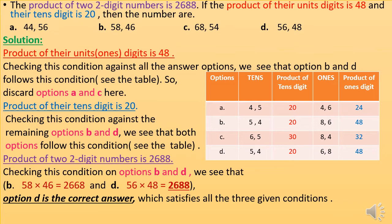Checking the second condition against the remaining options B and D, we see that both options follow this condition — both have a product of tens digits equal to 20. Now the third condition is that the product of the two two-digit numbers is 2688. Checking this condition on options B and D: